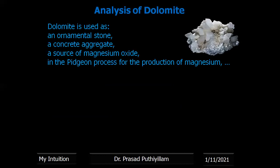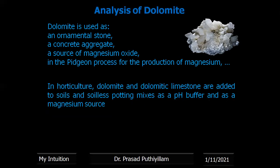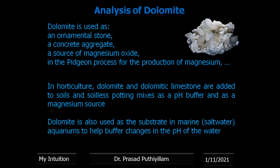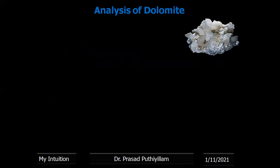For the uses of dolomite: it is used as ornamental stone, as a mixture in concrete or concrete aggregate, and as a source of magnesium oxide. It is also used for the production of magnesium by a process known as the Pidgeon process. In horticulture, dolomite and dolomitic limestone are added to soil or soilless potting mixes to maintain pH, acting as a buffer.